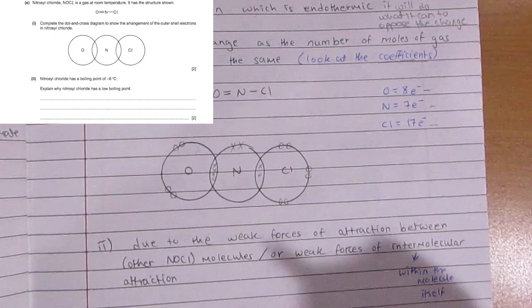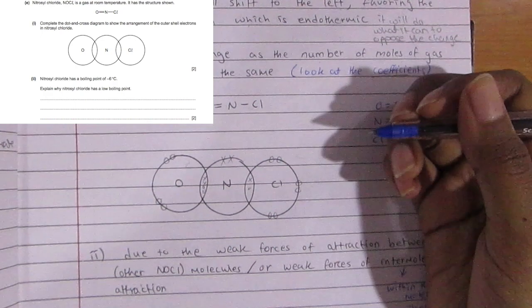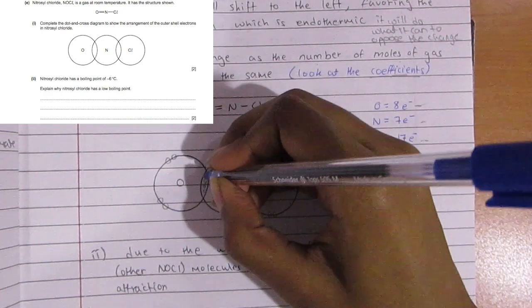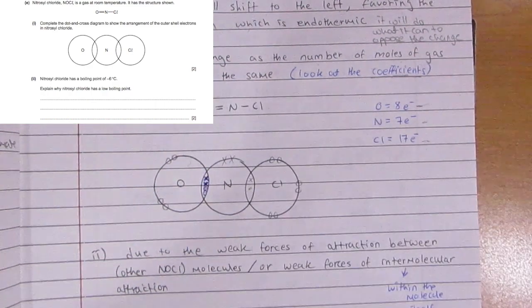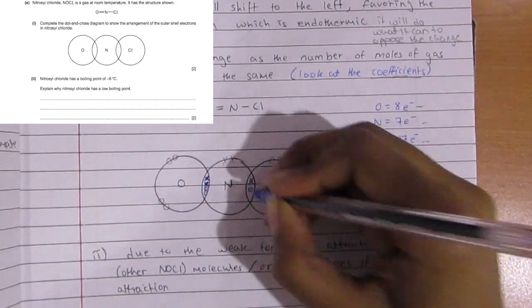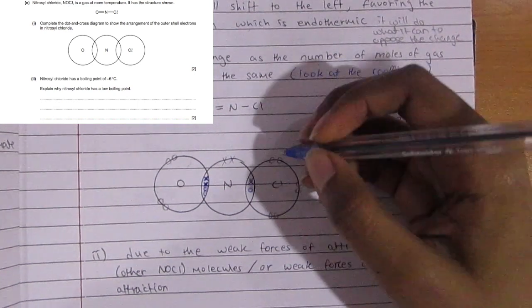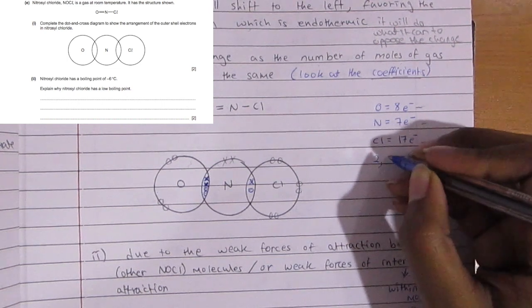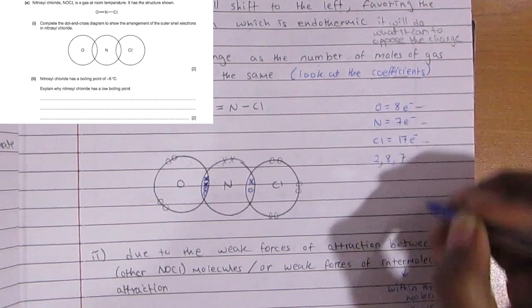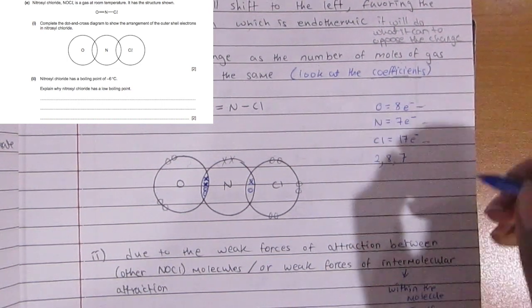Here we have oxygen, nitrogen, and chlorine. Oxygen has eight electrons, nitrogen seven, chlorine seventeen. It's a double bond between nitrogen and oxygen, so there's a total of four electrons there—two from nitrogen, two from oxygen. For the chlorine, one from chlorine and one from nitrogen.